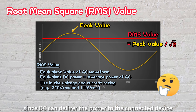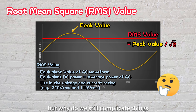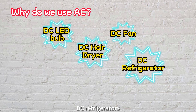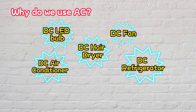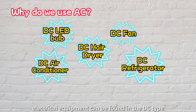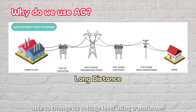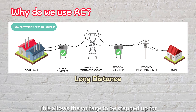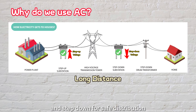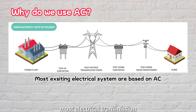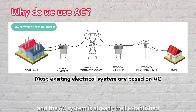People may wonder: since DC can deliver power to connected devices for functioning, why do we still complicate things by introducing AC waveform, which seems unnecessary? For example, there are DC-powered LED bulbs, DC fans, DC hair dryers, DC refrigerators, and DC air conditioning units available in the market. Most AC electrical equipment can also be found in DC types, but why do we still need AC? The reason is that in the past, AC was found to be more suitable for transmitting power over long distances. AC has the advantage of being able to change its voltage level using a transformer, allowing the voltage to be stepped up for efficient transmission and stepped down for safe distribution. DC, on the other hand, could not achieve this function back then. For many years, most electrical transmission and distribution systems have been based on AC, and the AC system is already well established.